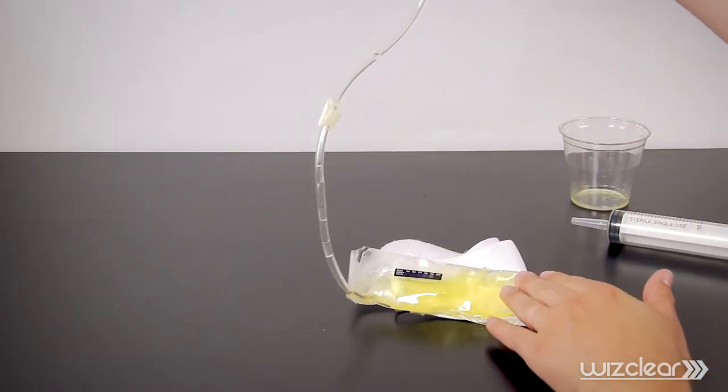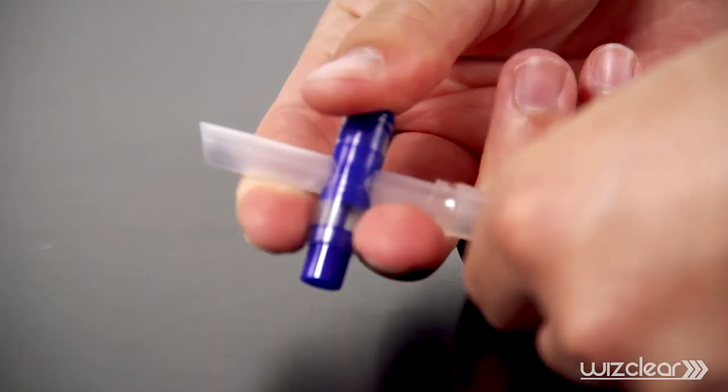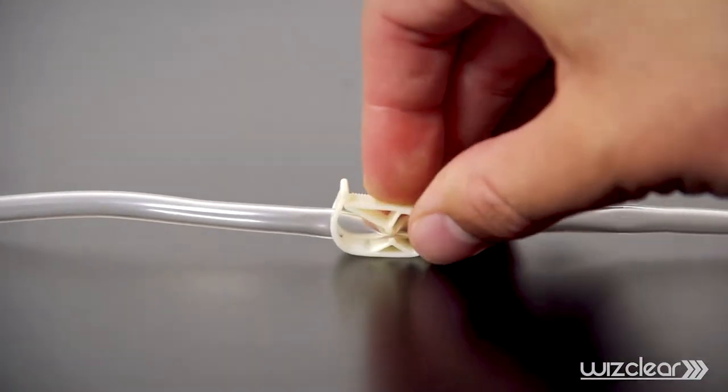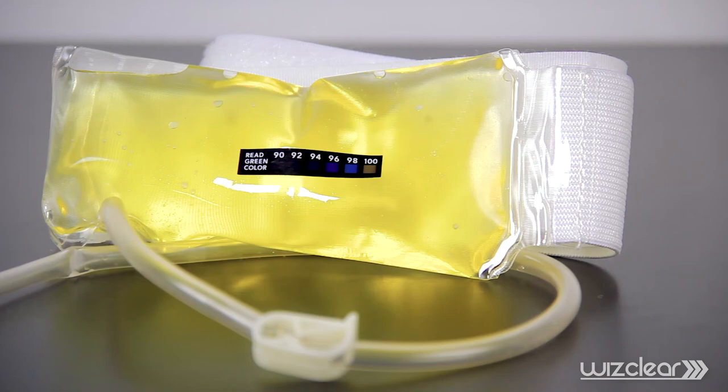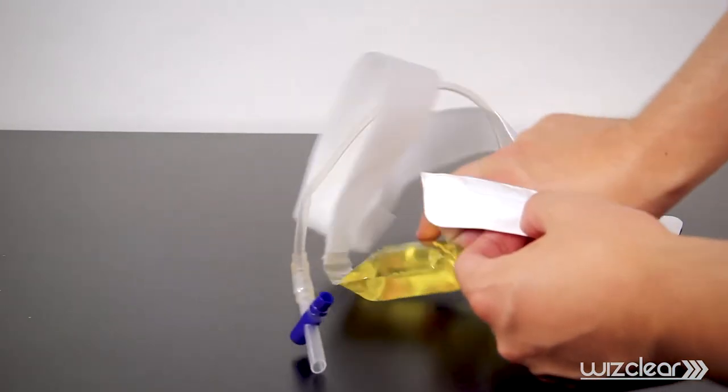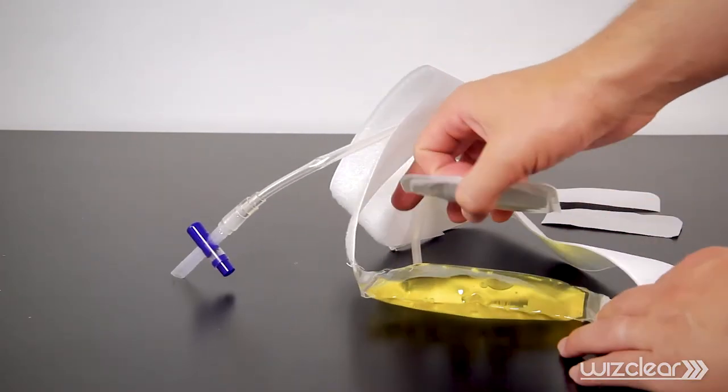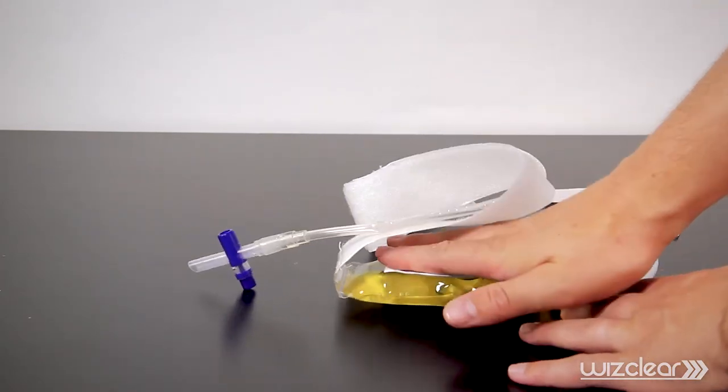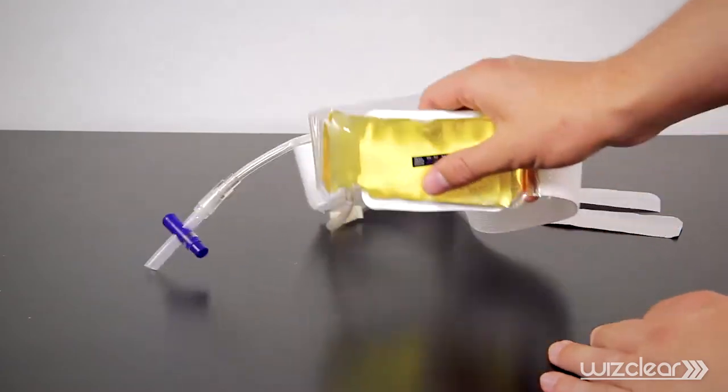After the sample is fully injected into the WizClear, close both the silent push-button valve and white arming clip. Next, we need to provide the WizClear with a constant heat source. Simply unpeel and secure the sticky heat warmer to the back of the WizClear on the opposite side of the heat strip. The hand warmer is designed to keep the WizClear between 98 and 100 degrees for up to 5 hours.